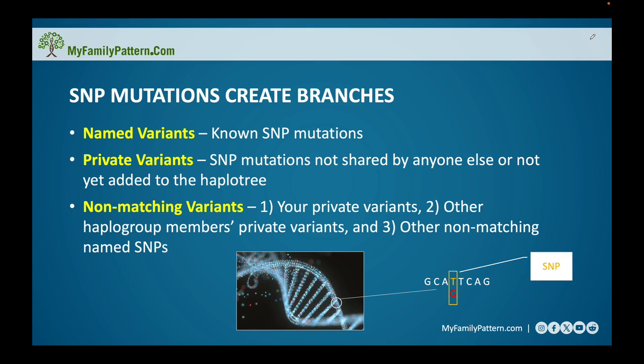When we look at these mutations, we look at what are called named variants — SNP mutations that are well known and documented in many other people's Y-DNA results. We also look at private variants, which are SNP mutations unique to you or not yet placed on the haplotree. There is also a broader umbrella term called non-matching variants, which includes all private variants unique to you, private variants unique to other members of your haplogroup, and other non-matching but named SNPs.